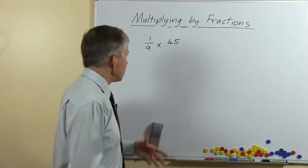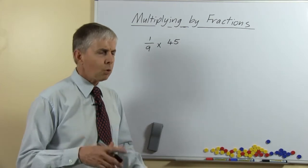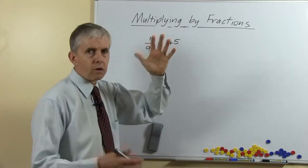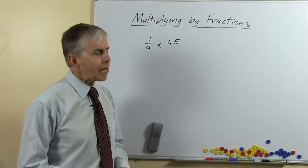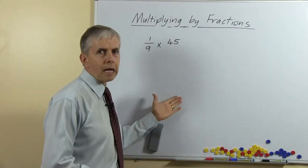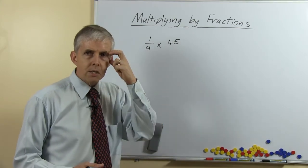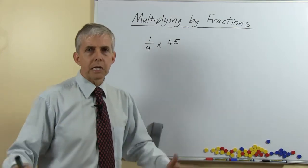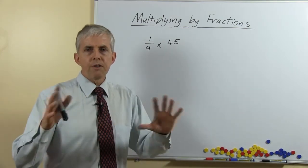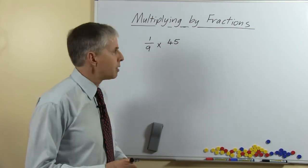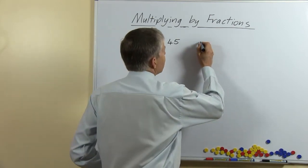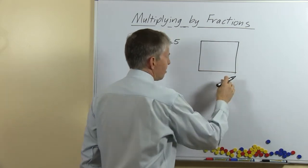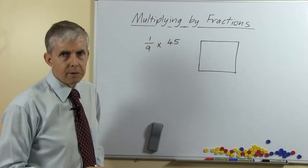Let's look at the question one ninth times 45. What we're not going to do is just say this means divide — put the nine under the 45 and use some symbolic method. At the point where students are learning what it means, we want to help them understand it. My suggestion is to give students large pieces of paper and felt pens or crayons so they can draw, and ask them to draw a square, because that makes it easy to divide into nine pieces.